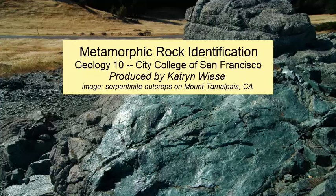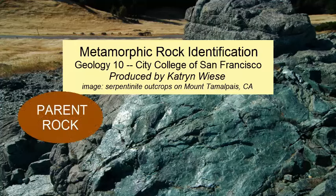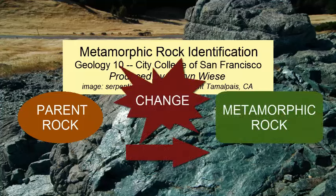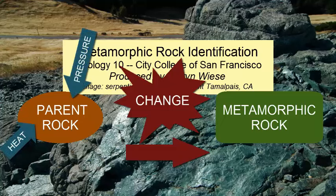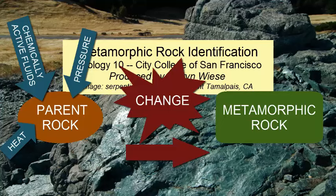Metamorphic rocks are formed when other rocks, known as parent rocks, are chemically and or physically transformed by increases in temperature and or pressure, and possibly by the addition and interaction of chemically active fluids, usually hot waters rich in dissolved ions.